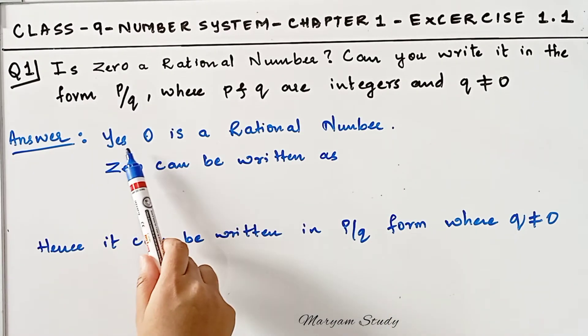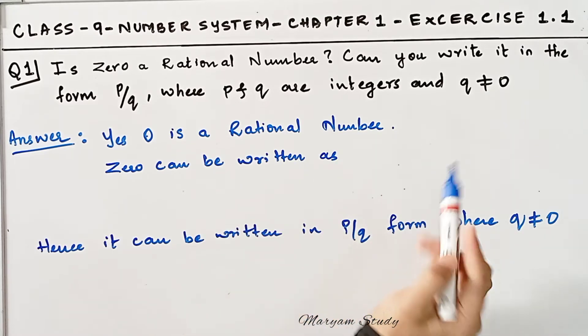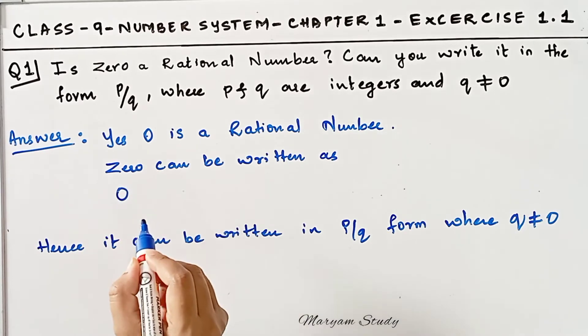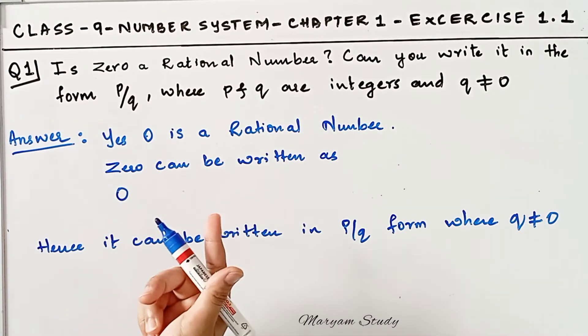Yes, 0 is a rational number and 0 can be expressed as P by Q form. We have seen in the introduction video that 0 is a rational number already.